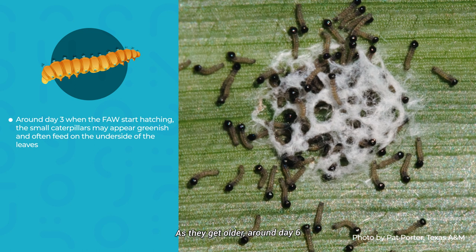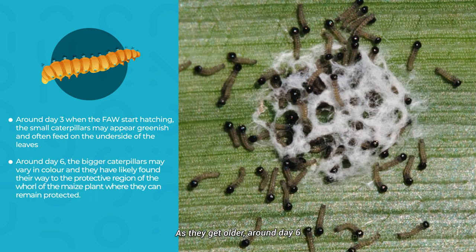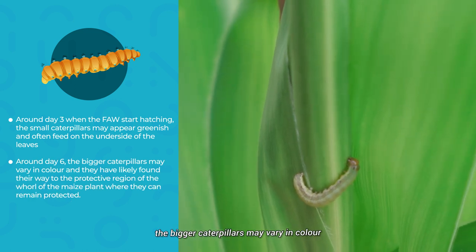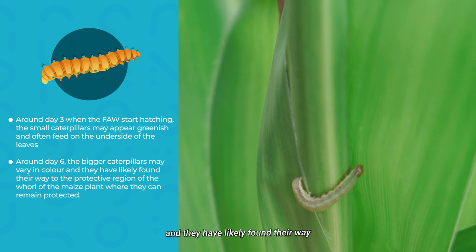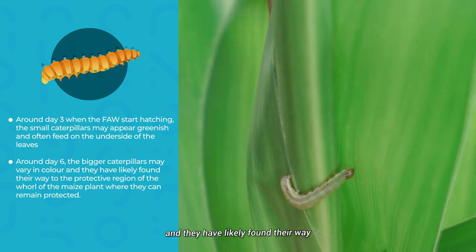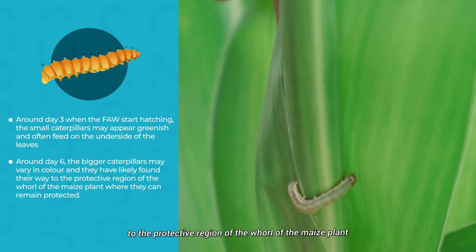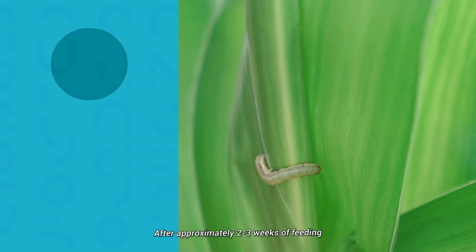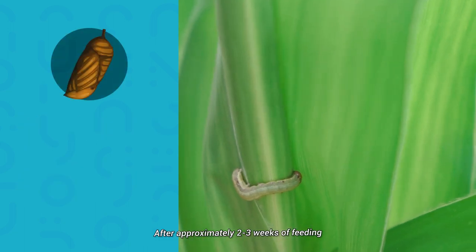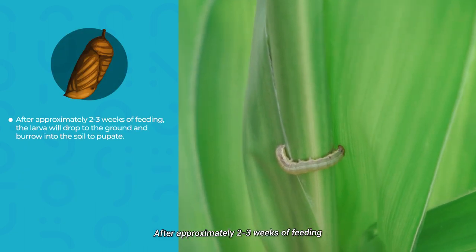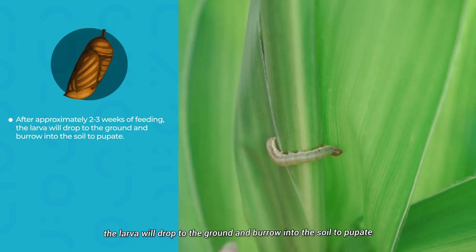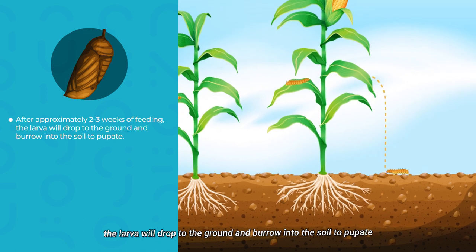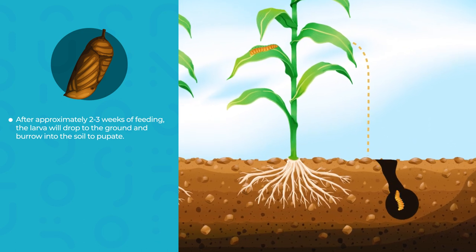As they get older, around day 6, the bigger caterpillars may vary in color and they have likely found their way to the protective regions of the maize plant. After approximately 2 to 3 weeks of feeding, the larvae will drop to the ground and burrow into the soil to pupate.